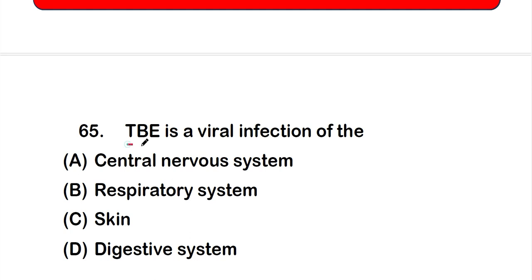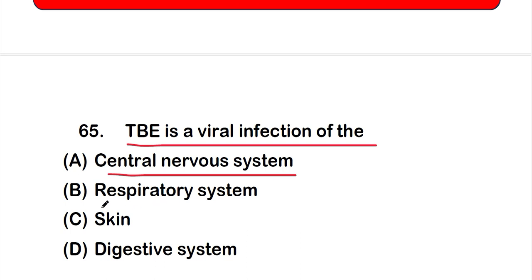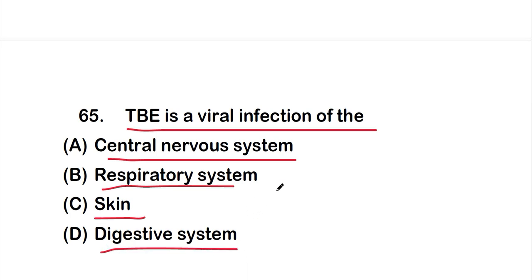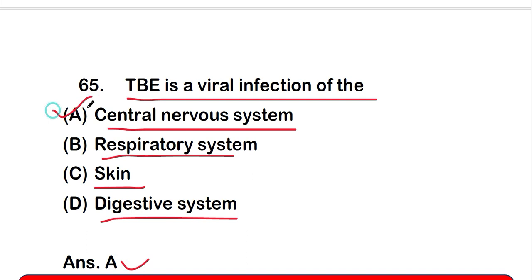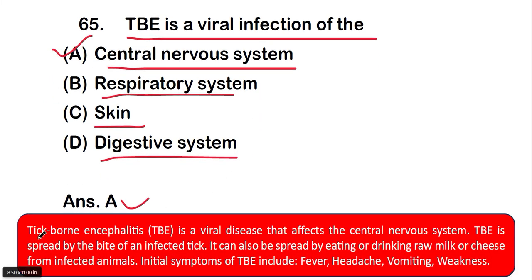Question number 65: TBE is a viral infection of — option A: central nervous system, option B: skin, or option C: digestive system. The correct answer is option A, central nervous system. Tick-borne encephalitis (TBE) is a viral disease that affects the central nervous system, spread by the bite of an infected tick. It can also be spread by consuming raw milk or cheese from infected animals. Initial symptoms include fever, headache, vomiting, and weakness.